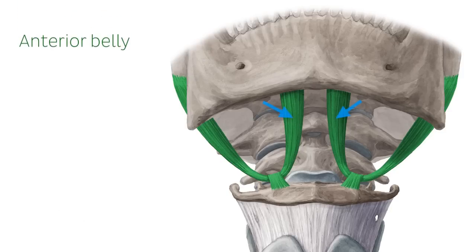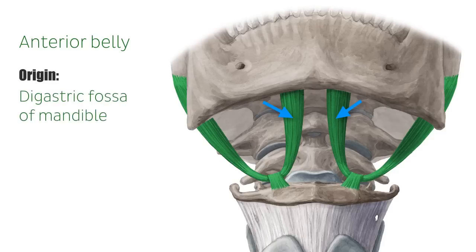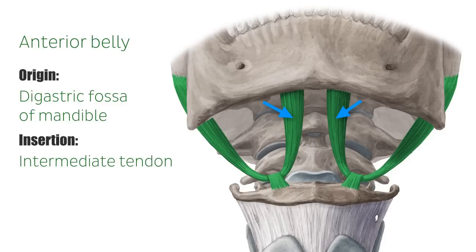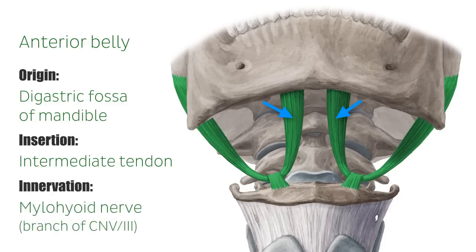The anterior belly of the digastric muscle, which is this part of the muscle I am pointing to here, originates from the digastric fossa of the mandible, and inserts together with the posterior belly on the intermediate tendon. The anterior belly is derived from the first pharyngeal arch and is therefore innervated by a branch of the mandibular nerve called the mylohyoid nerve.